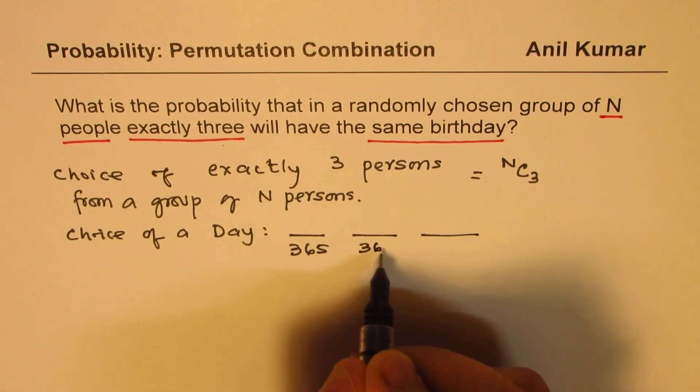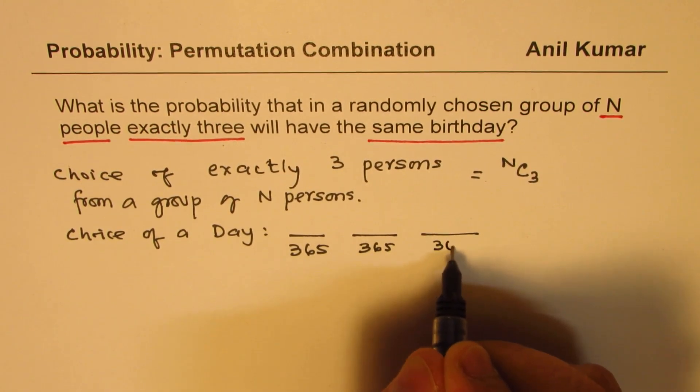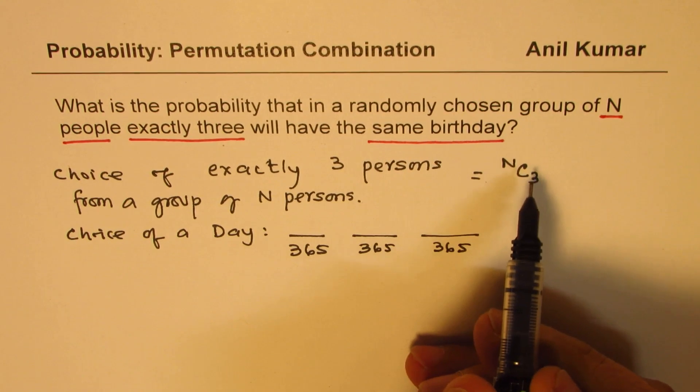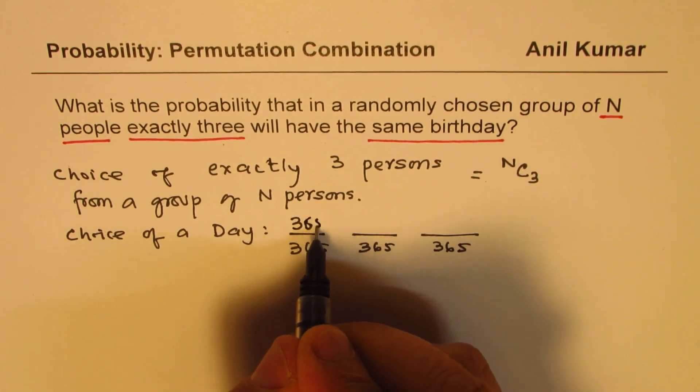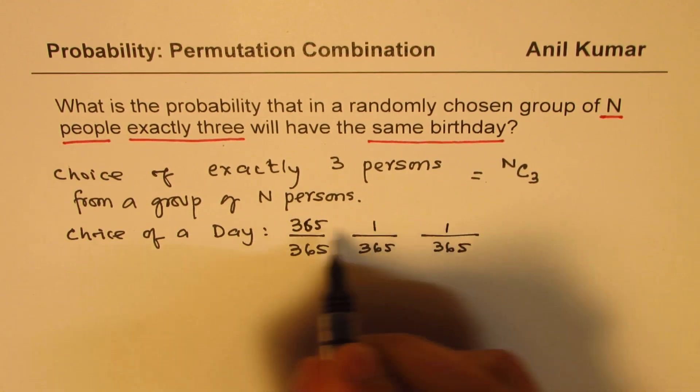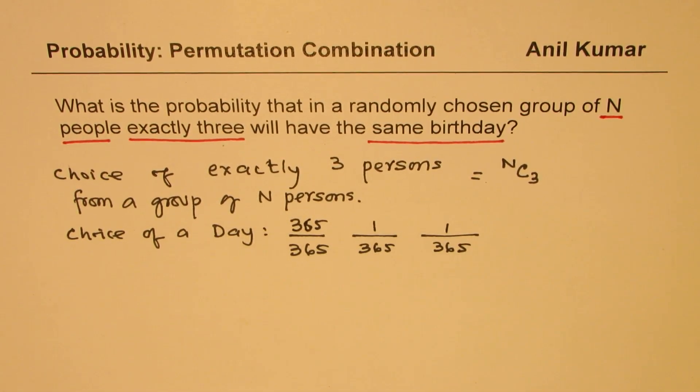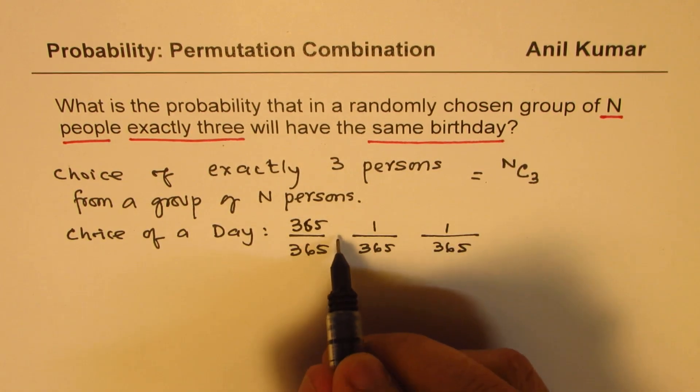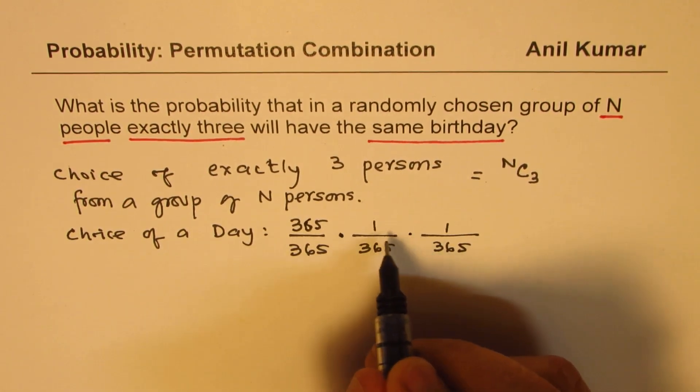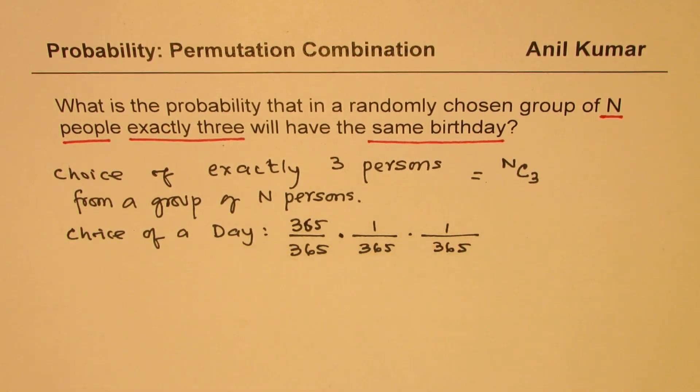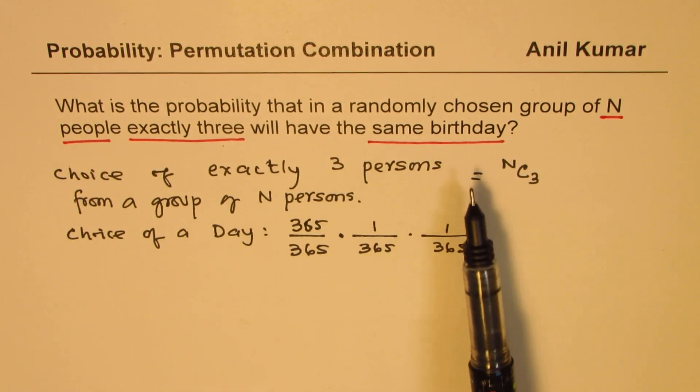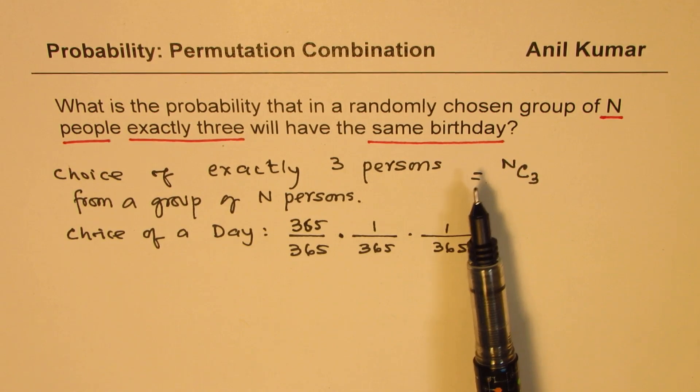So the denominator will be 365. So what we have done, for the first person, you can choose any of the 365 days. For the others, it has to be the same day. So what you get here is 365 times 1 times 1 divided by 365 cube. That becomes the days chosen for these people.